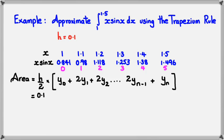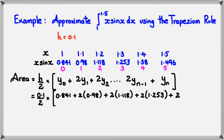h equals 0.1 divided by 2 times y0, which is just those values. I'm not going to read it out: 2 times y1 plus 2 times y2 plus 2 times y3, 2 times y4, and y5 is by itself, so plus 1.496. Putting this in the calculator and simplifying it, you should get 0.59 units squared.